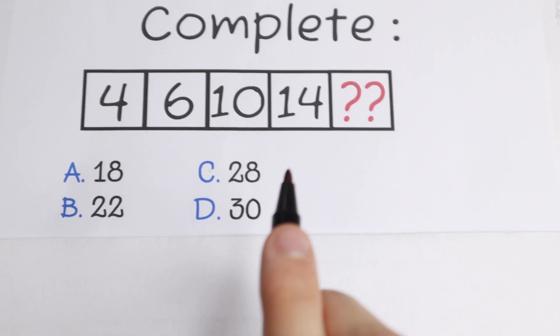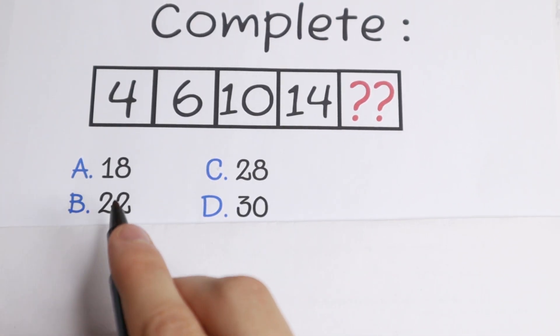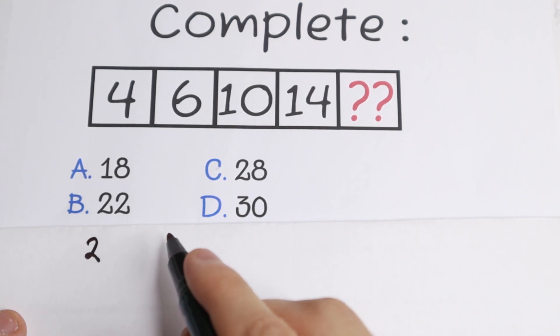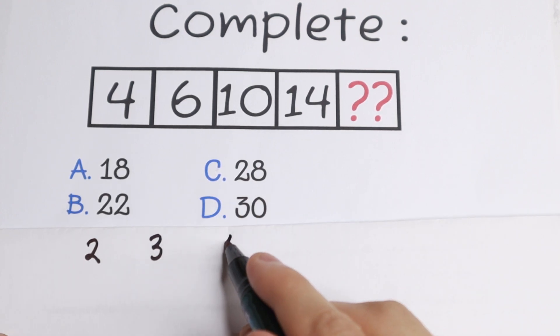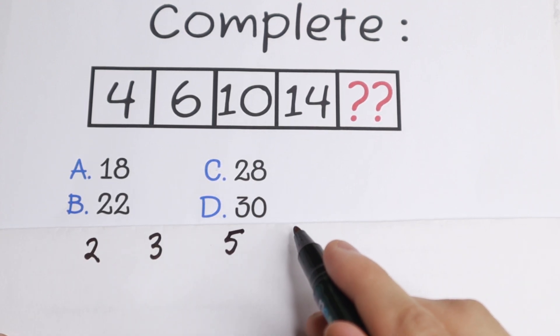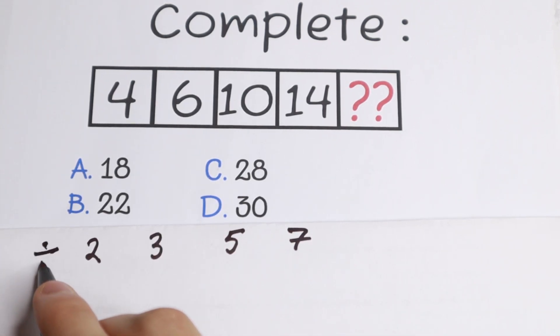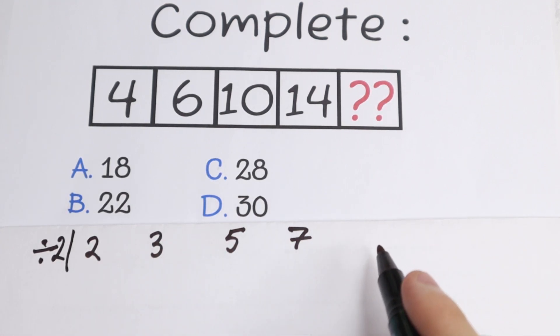I want to show you right now. Take a look closely. If we divide all these numbers by 2. So if we divide this 4 by 2, we will have 2. If we divide this 6 by 2, we will have 3. If we divide this 10 by 2, we will have 5. And this 14 divided by 2 is 7. So as you can see, I divide all elements by 2.